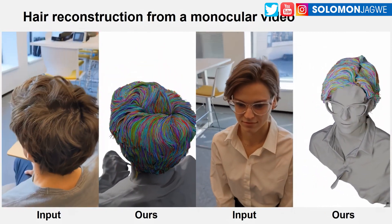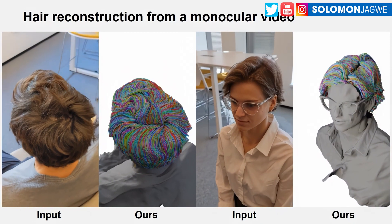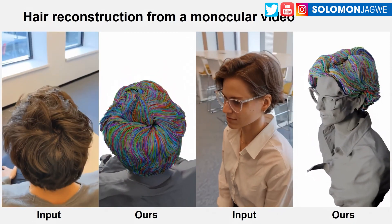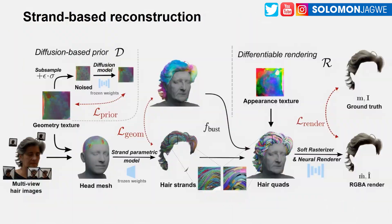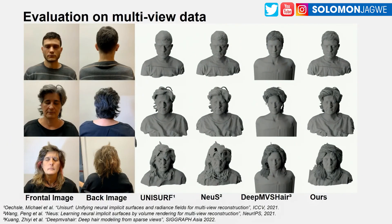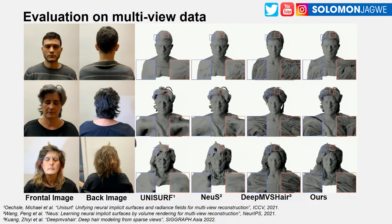That gives you the opportunity to actually do physics simulations if you want to. This is incredible. The way it works, it starts off with a scan — they use a head mesh — and the end result is the geometry that you see recorded here. They've compared it to different systems.